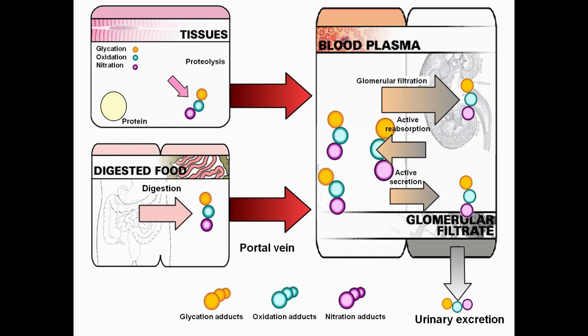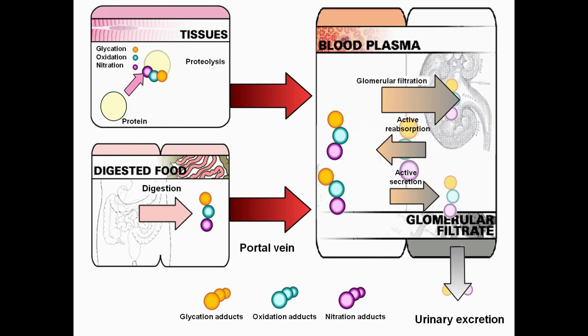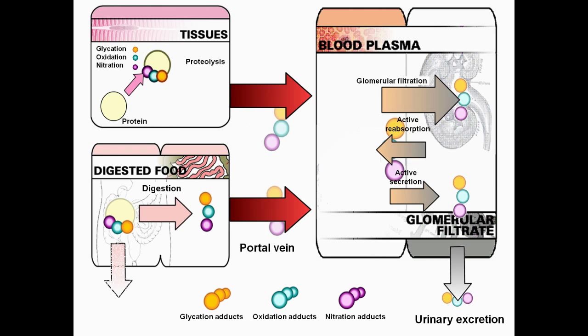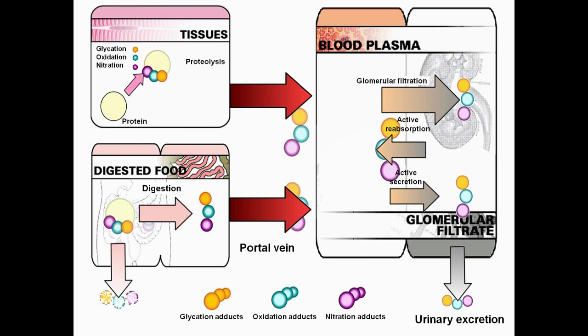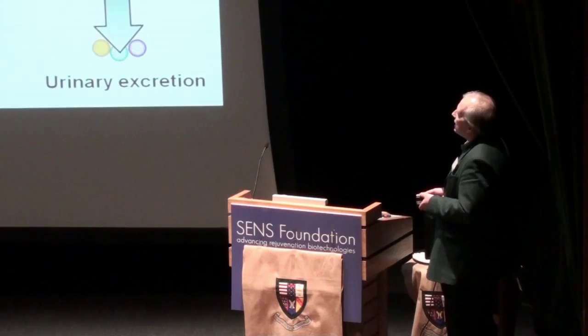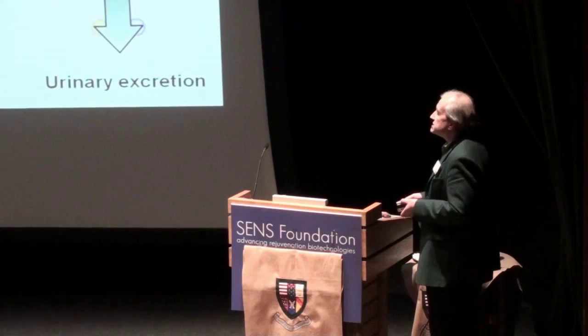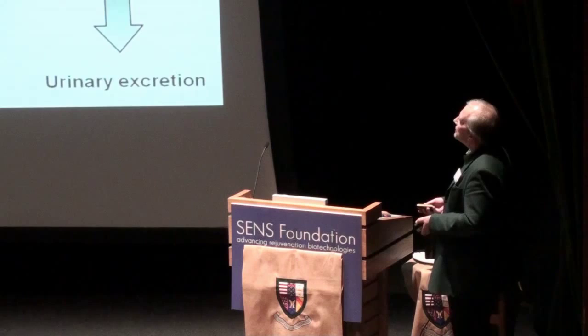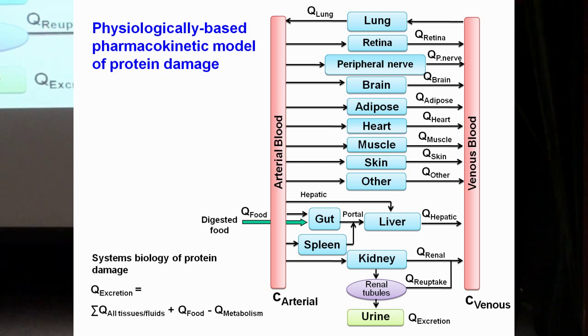There is a problem: we're ingesting damaged proteins all the time, and those that are not too heavily damaged we digest and absorb as damaged amino acids. We are one of the few groups that has actually measured damaged peptides from ingested proteins in portal venous plasma, so it does happen and makes the analysis a little more complicated. If proteins are very highly damaged, we can't digest them and we just excrete them.